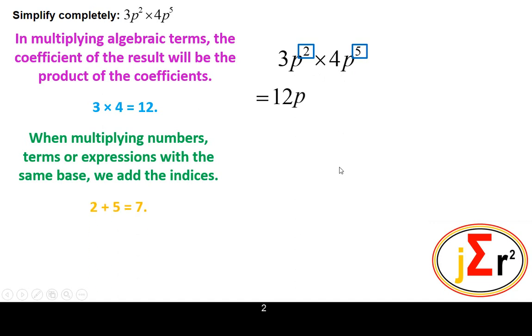And what are the indices? The indices are 2 and 5. 2 plus 5 is equal to 7, and that's all we need to do. Add those values, and that becomes the index of p in the answer.